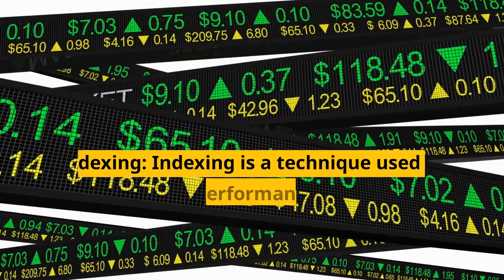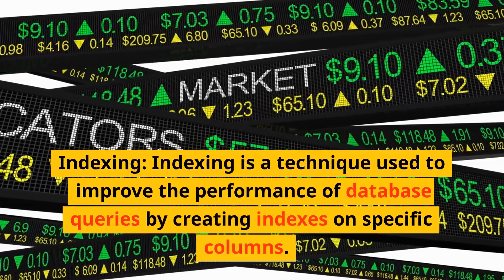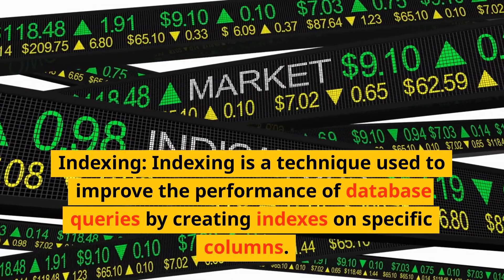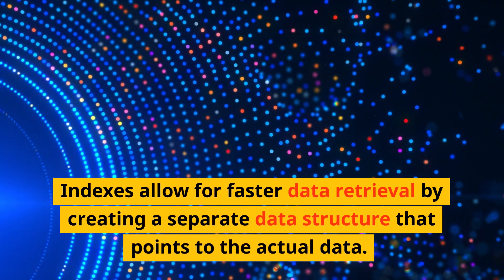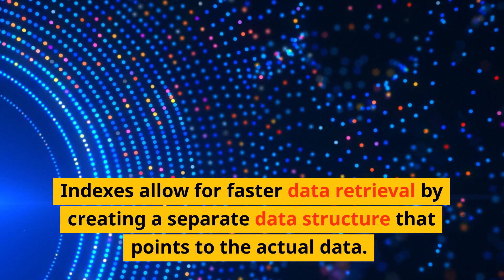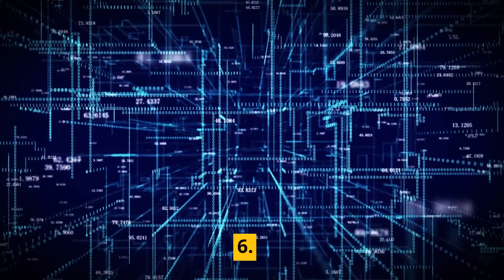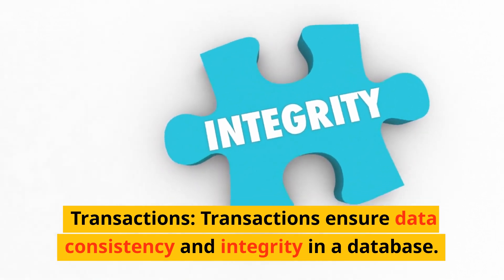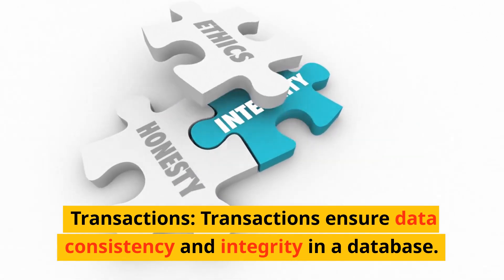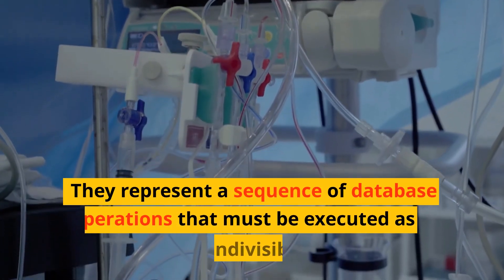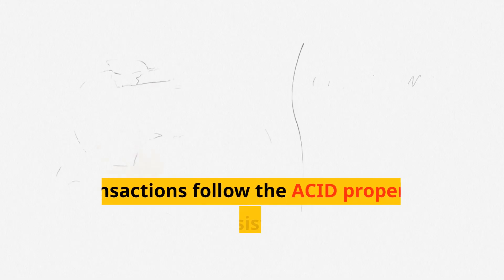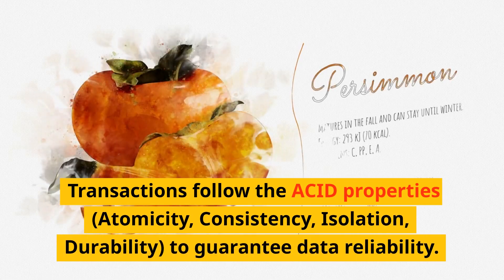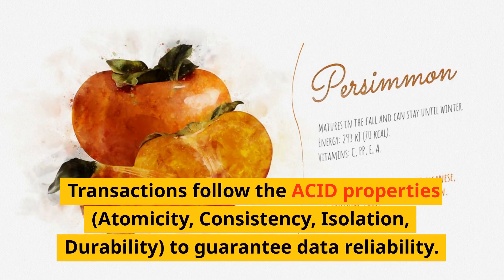5. Indexing: Indexing is a technique used to improve the performance of database queries by creating indexes on specific columns. Indexes allow for faster data retrieval by creating a separate data structure that points to the actual data. 6. Transactions: Transactions ensure data consistency and integrity in a database. They represent a sequence of database operations that must be executed as a single, indivisible unit. Transactions follow the ACID properties — atomicity, consistency, isolation, durability — to guarantee data reliability.